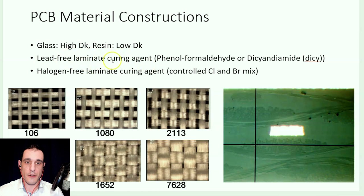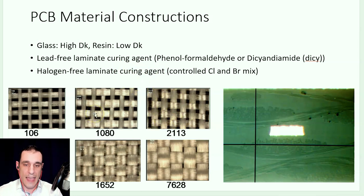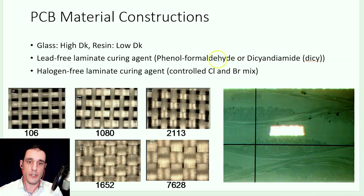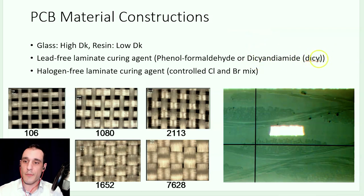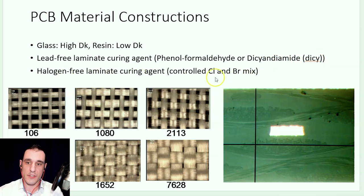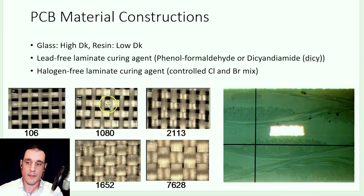All of these materials are either a lead-free or a halogen-free laminate, and the two are classified based on the curing agent. The curing agent is essentially an agent included with the resin that activates when the stack-up is being pressed, allowing the laminate materials to bond to each other. For a lead-free laminate, the curing agent is typically phenyl formaldehyde or dicyandiamide — DICY is the shortened name you'll commonly see. There are also halogen-free laminate curing materials, which essentially control the amounts of chlorine and bromine in the material. All of this comes together to create the resin mix that is pressed with the glass to produce a PCB laminate material.